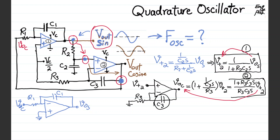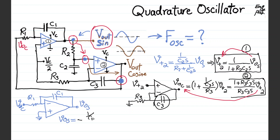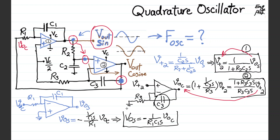The gain from input to output in this inverting amplifier is straightforward. We can write that Vout sine equals negative (1/C1S) / R1 times Vout cosine, which simplifies to: Vout sine = −(1/(R1·C1·S)) times Vout cosine. This is equation 3.